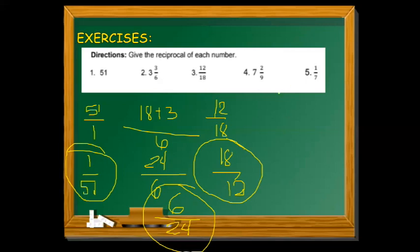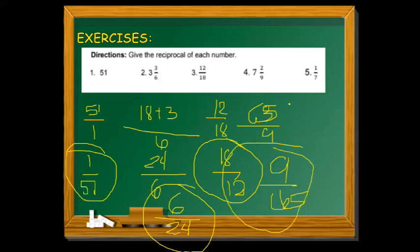And then 7 and 2/9. We need to change it to a fraction first. 9 times 7 equals 63, plus 2 equals 65 over 9. So the reciprocal is 9 over 65.